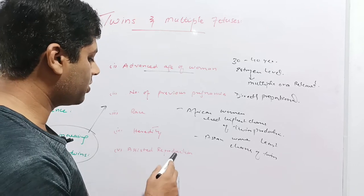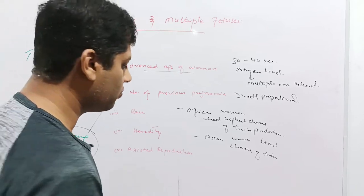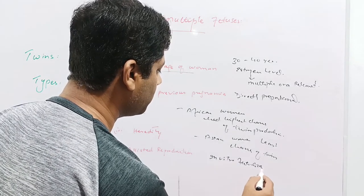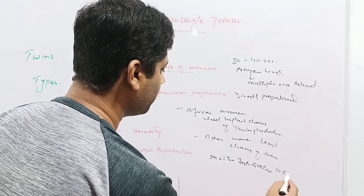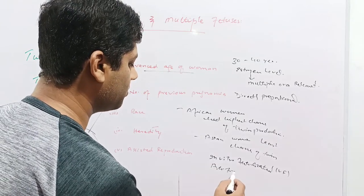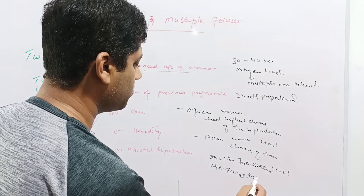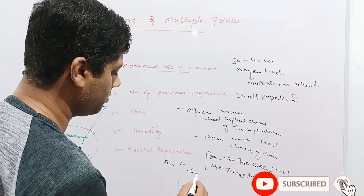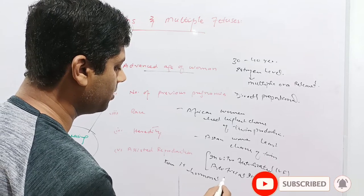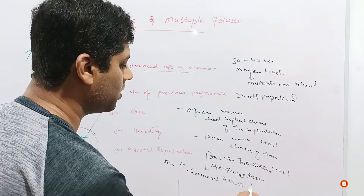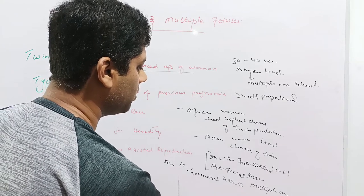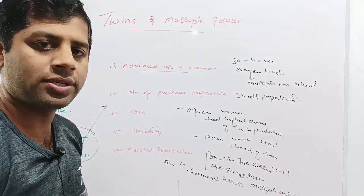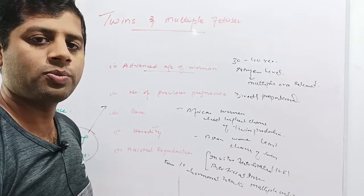The next factor is assisted reproductive technology, for example in vitro fertilization — also called IVF, test tube babies, or artificial insemination. In both these techniques there is hormonal treatment, and these hormones may induce multiple ovulation. If multiple ova are released, the chances of twin production will also increase. These are the important factors which increase the rate of twin production.